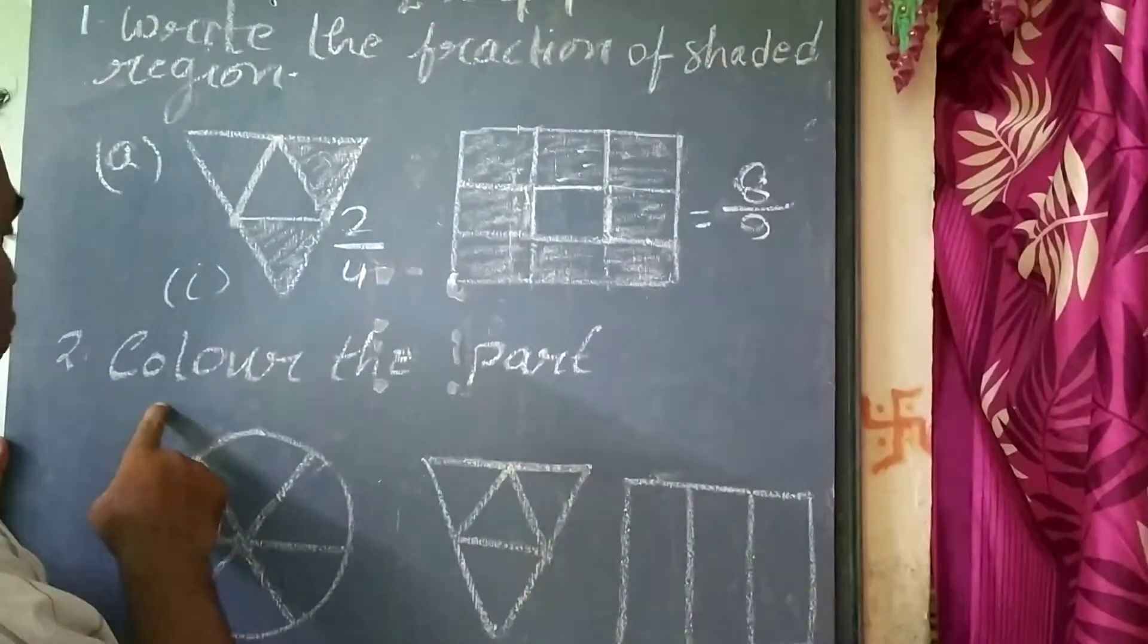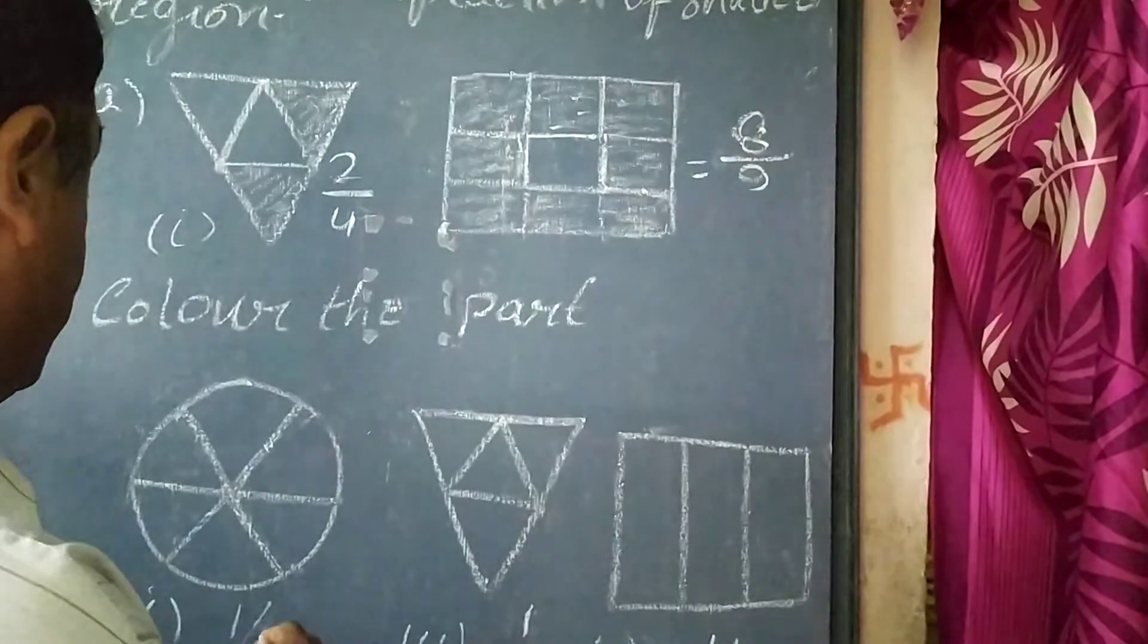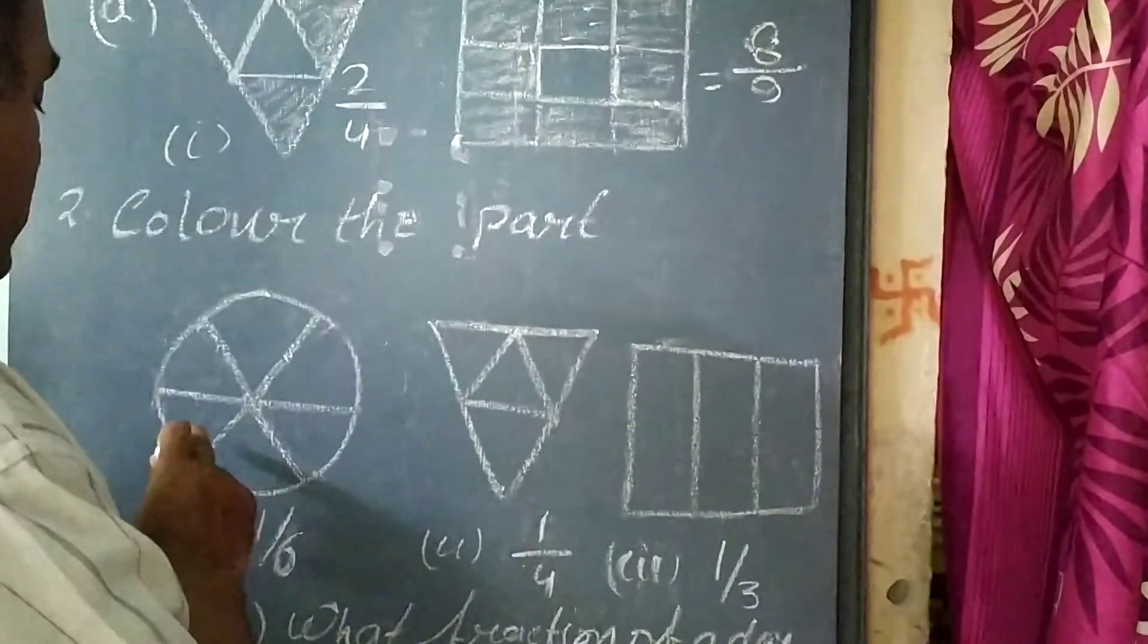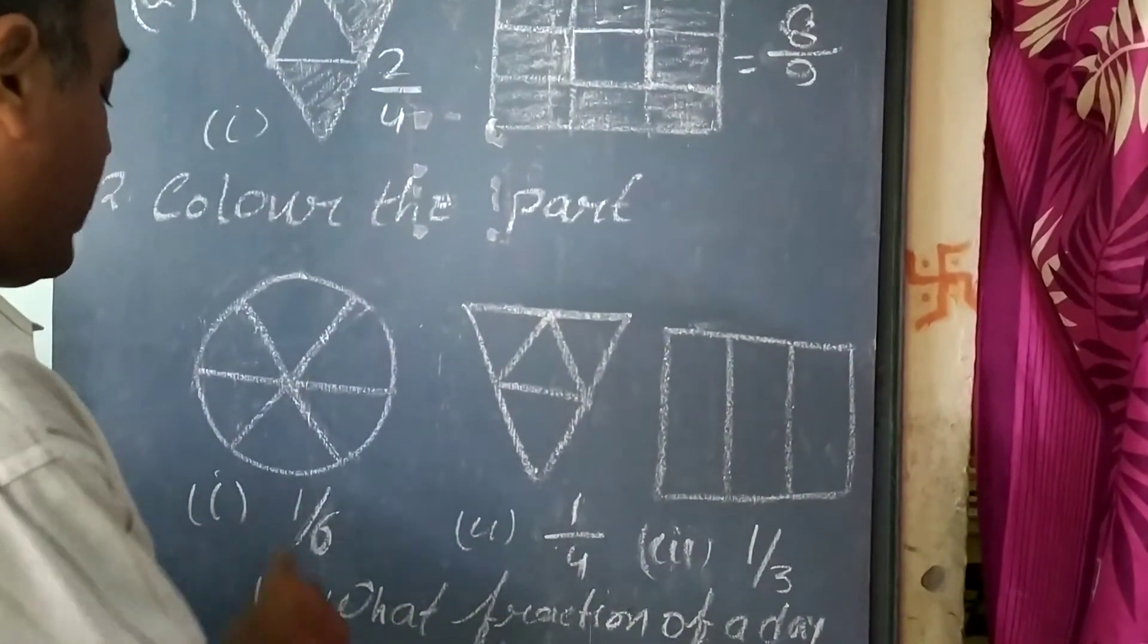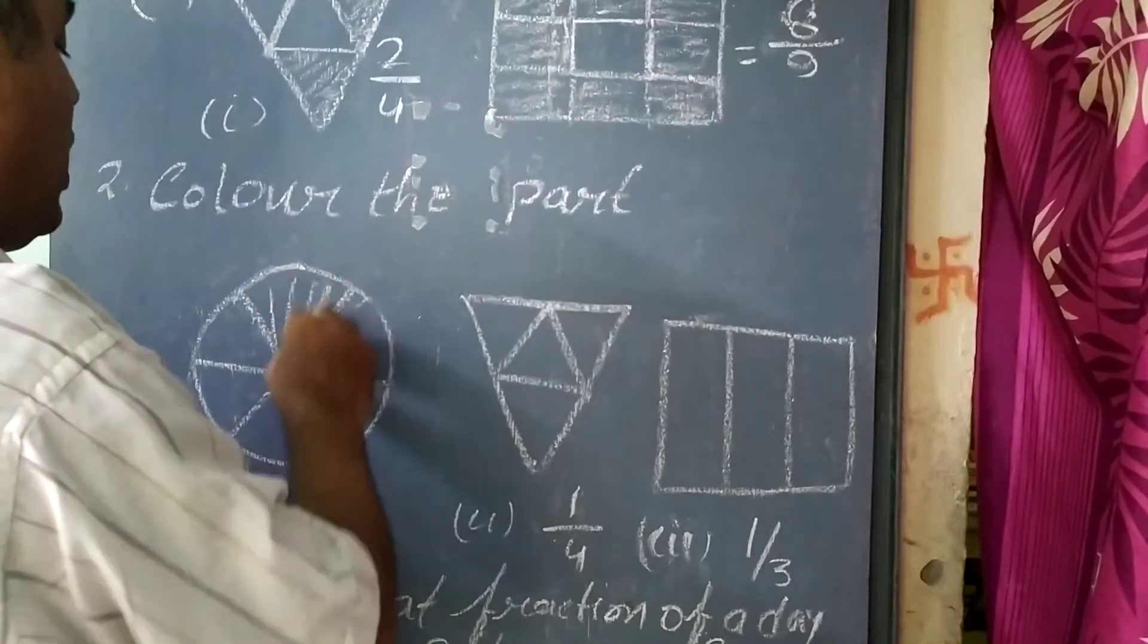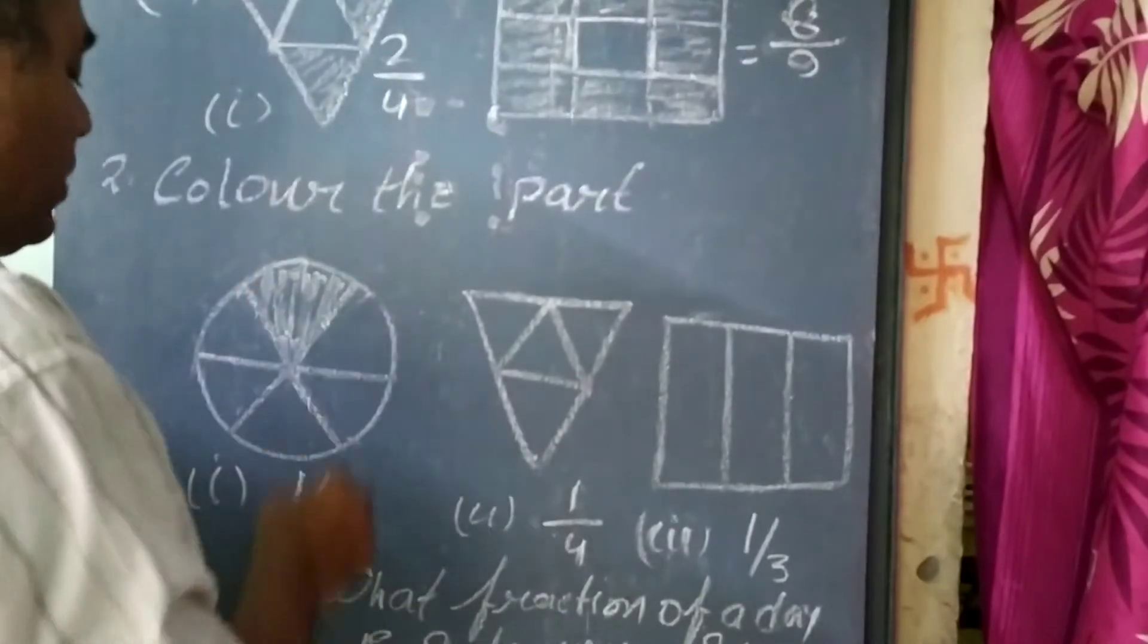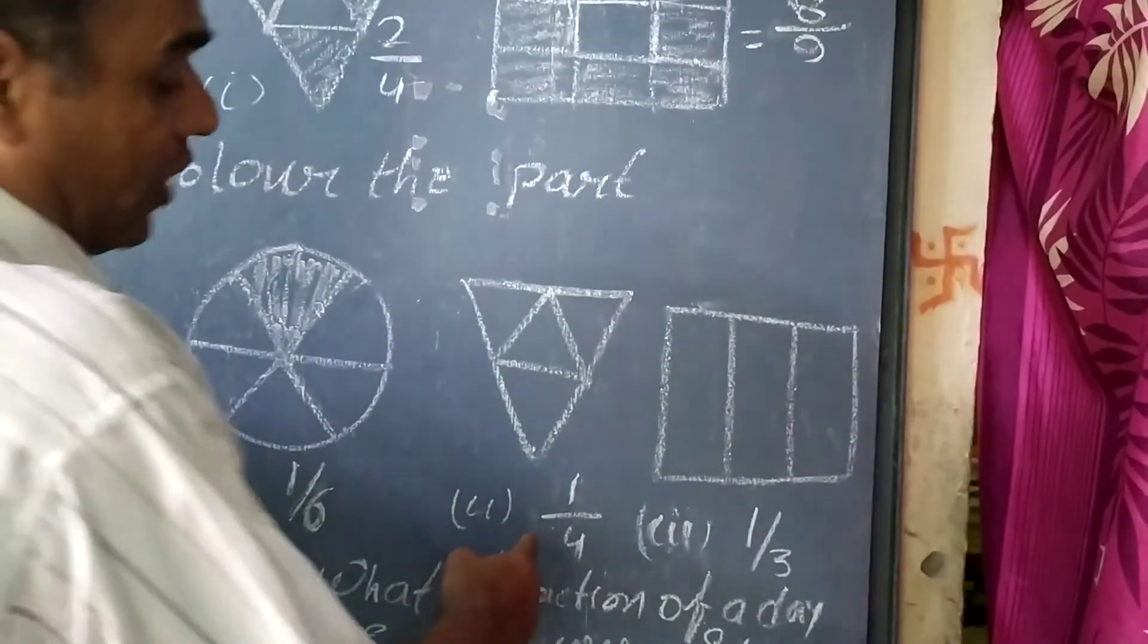Now in question number 2, color the part. The fraction given is 1 by 6. There are 6 portions: 1, 2, 3, 4, 5, 6. We have to color 1 part. I am coloring 1 part. This circle becomes 1 by 6. The shaded portion becomes 1 by 6.